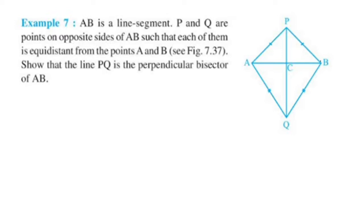AB is a line segment. P and Q are points on opposite sides of AB. These two points are equidistant from AB. Point P is equidistant from A and B, so PA is equal to PB. Similarly, QA and QB are equal.